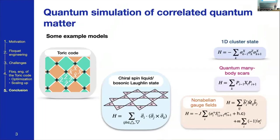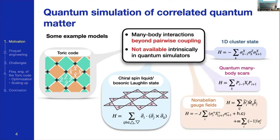Let me start by trying to motivate what type of problem we are trying to solve. We'll be talking about methods to simulate certain types of highly correlated systems. Here I'm showing a sample of a few models that people are interested in — ranging from the Toric code, intended as the Hamiltonian model rather than the error correcting code, up to cluster states and so on.